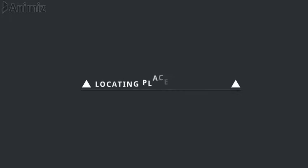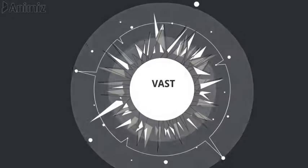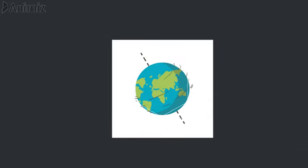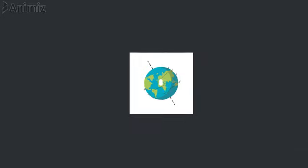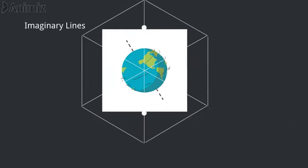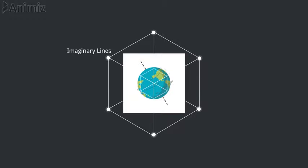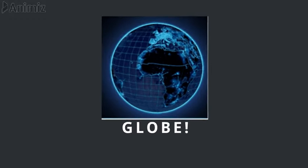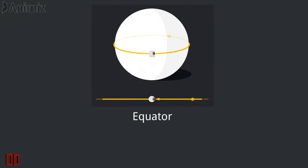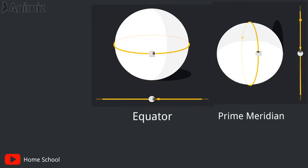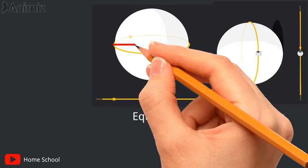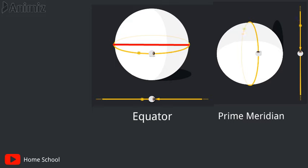Now we are going to discuss about locating places on a globe. As we know that the earth's surface is vast, so to help us find the location of different places, some imaginary lines are drawn on a globe. Among these lines, there are two important lines. One is the equator, which divides the earth into two equal halves. The other line is the prime meridian, which also divides the earth into two equal halves. The equator divides the earth horizontally and the prime meridian divides the earth vertically.